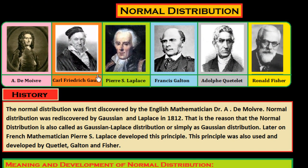In this session we study about the normal distribution. On the wall you will see pictures of many mathematicians: Abraham de Moivre, Carl Friedrich Gauss, Pierre-Simon Laplace, Francis Galton, Adolphe Quetelet, and Ronald Fisher. These are all the mathematicians who gave their valuable contribution in the theory of normal distribution.